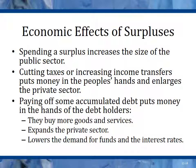Spending a surplus increases the size of the public sector, while cutting taxes or increasing income transfers puts money in people's hands and enlarges the private sector. Cutting taxes gets money back to the people, who spend it and move the economy forward further. Paying off accumulated debt puts money in the hands of debt holders, who will spend it, expanding the private sector and growing the economy. If the government simply spends the surplus, it puts money back in the economy but grows government.